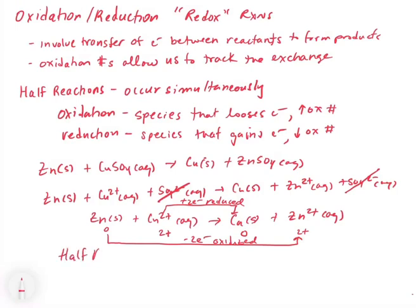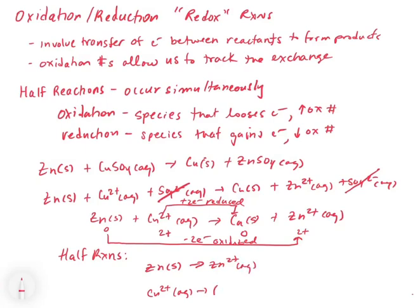Copper is going from 2+ to copper 0, so it's gaining two electrons and therefore it's being reduced. Now we know which species is reduced and which is oxidized. To write our half-reactions, we link reactants and products together. Zinc solid is linked to Zn2+, and Cu2+ is linked to copper solid. So we write: Zn(s) → Zn2+ and Cu2+ → Cu(s). We know one is being oxidized and one is being reduced, so for the oxidized species, electrons are going to be a product.